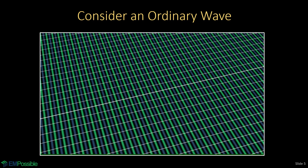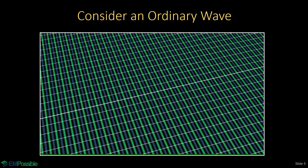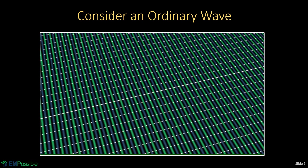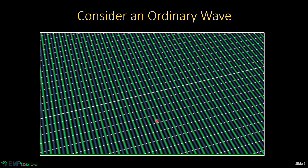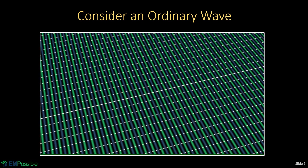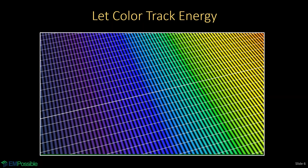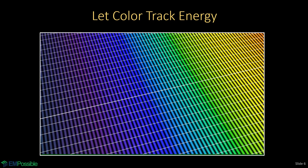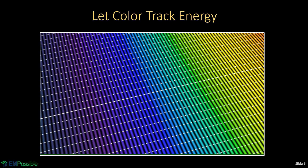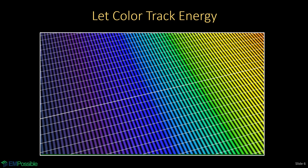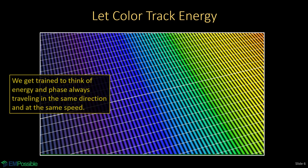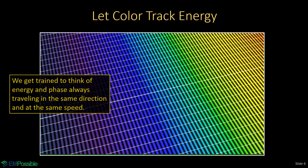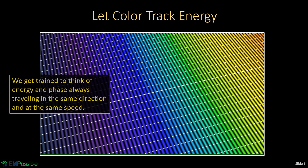Let's think about an ordinary wave, with white lines indicating the paths that the light is traveling along. These wavefronts — these ripples of the wave — are showing us what phase is doing. But what about the energy? In the vacuum of space, phase and energy velocities are in the same direction, have the same magnitude, and are doing the same thing. In fact, since we like to simplify things in our electromagnetics classes, we get trained in school to think that energy and phase are always in the same direction. When they're not, it really seems magical.